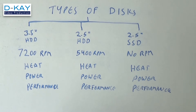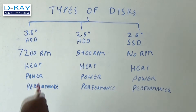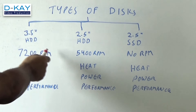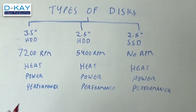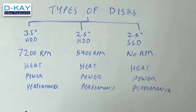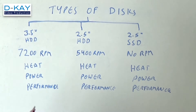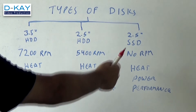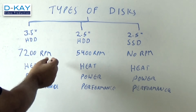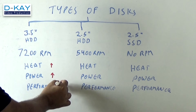We are classifying disks into three formats. First is the classic 3.5 inch HDD, which is a hard disk drive that runs at 7200 RPM — this kind of disk is used in desktop computers. Then we have the 2.5 inch HDD, also a hard disk drive but running at 5400 RPM. The third kind is the SSD, which also comes in 2.5 inch but has no RPM because there is nothing rotating inside — no platter, no spinning disk. The 7200 RPM drive generates more heat and consumes more power.